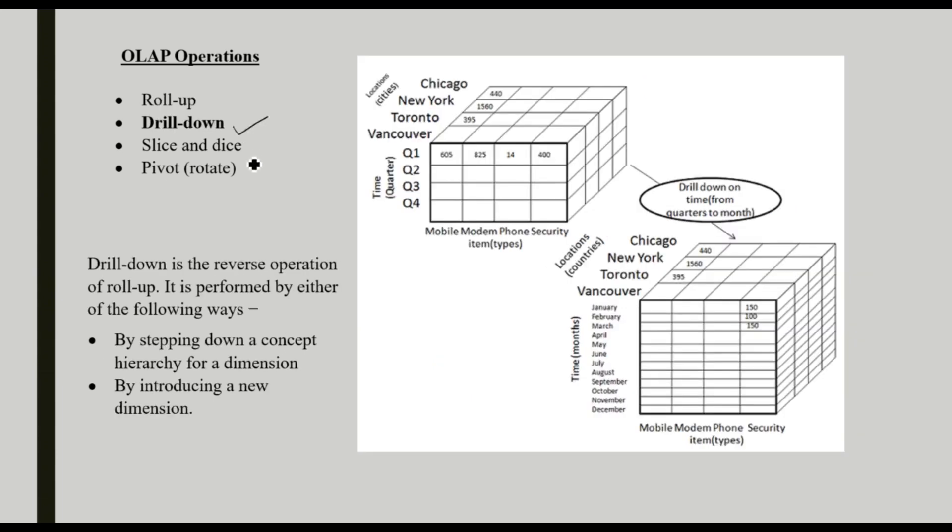The second operation is drill-down. Drill-down means the opposite, the reverse operation of roll-up. In roll-up, we are summarizing or aggregating the details. But here, we are splitting up or stepping down. We are moving to the detailed view of our data, by stepping down a concept hierarchy for a dimension or by introducing a new dimension.